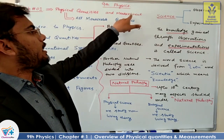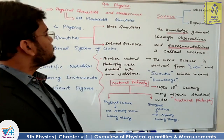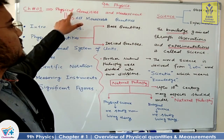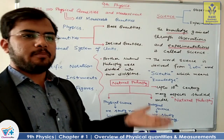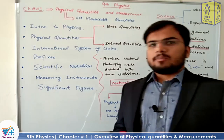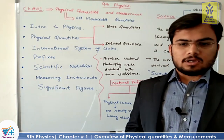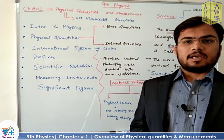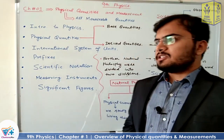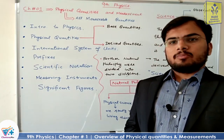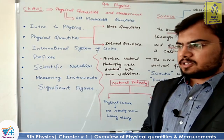Physical quantities are those quantities which are measurable. Now what are measurable quantities? We might think that every thing is measurable — like we can measure the amount of light intensity. First of all, we need to see some parameters which can be measured and some which cannot be measured. How are the measurable quantities defined?